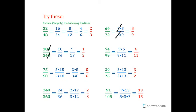54 over 99. That's a little bit trickier. Well, what do you know? You know 54 is 9 times 6. Oh, and 99 is 9 times 11. So you get rid of your 9's and you're left with 6 over 11.